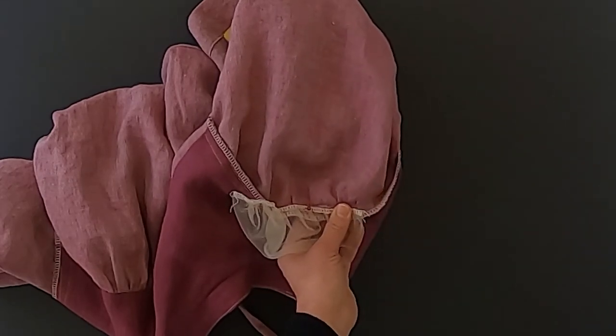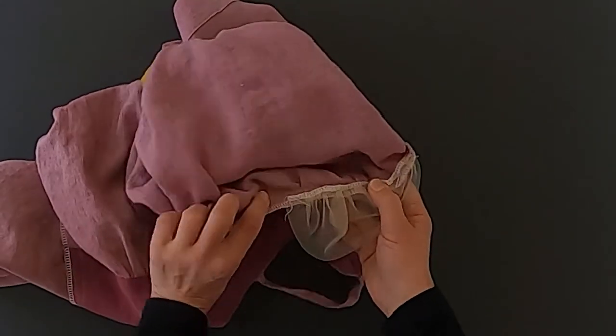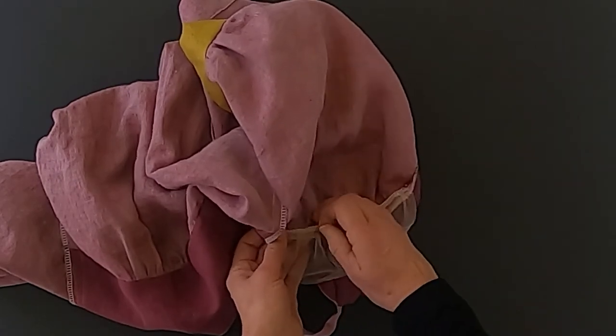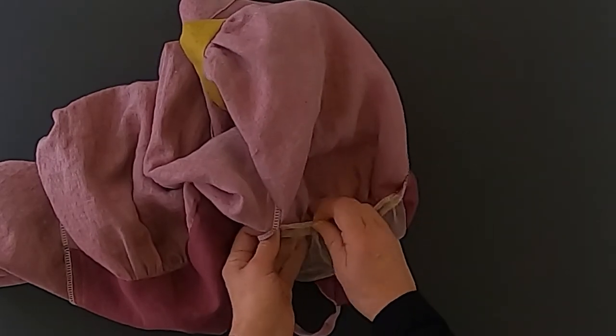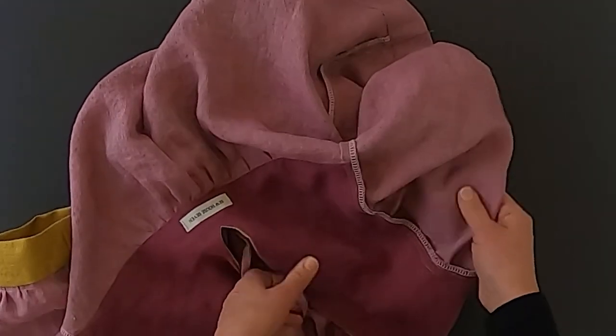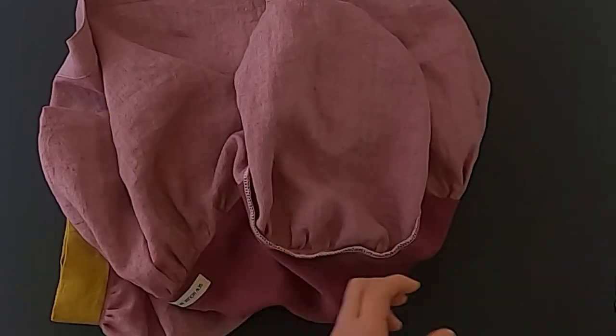When we turn the garment inside out, the yoke seams will be pressed towards your sleeve. So we want to sandwich that serged finished or zigzag finished edge of your sleeve head poof in between that seam that is the yoke seam to the sleeve seam. So it'll be in between the sleeve and that seam.